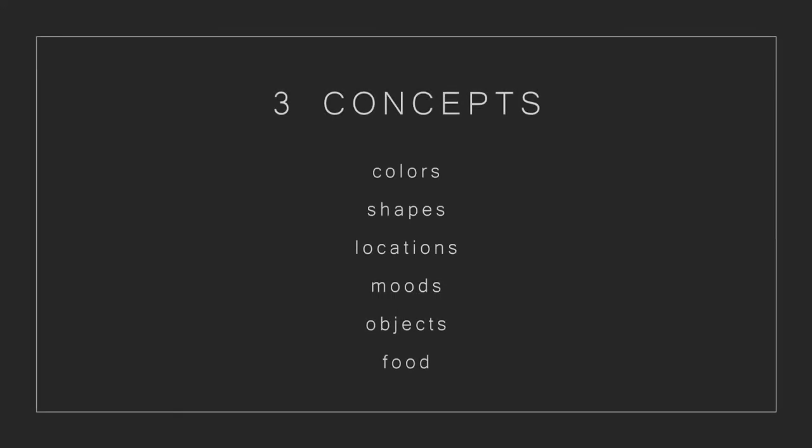Examples of categories you could use are colors, shapes, locations, moods, objects, food, etc.